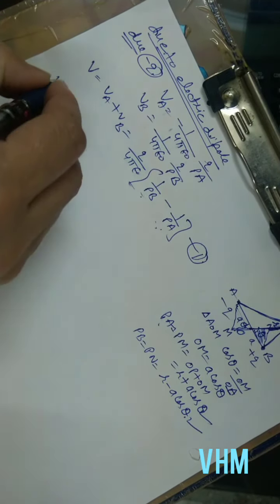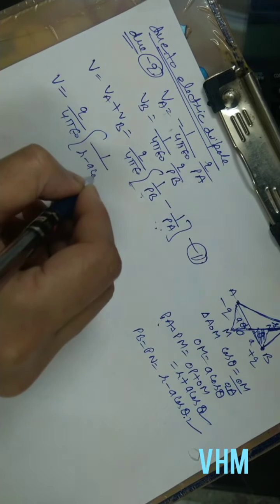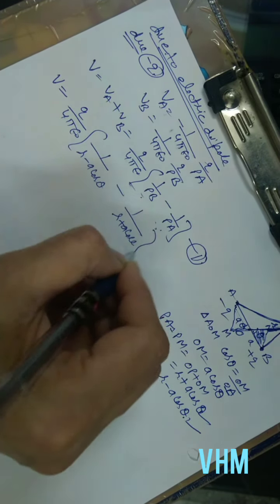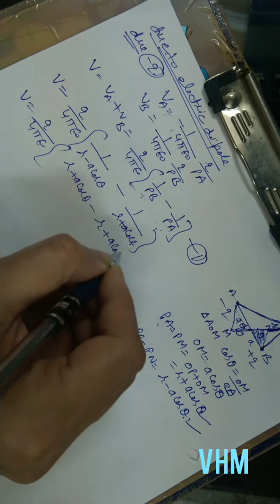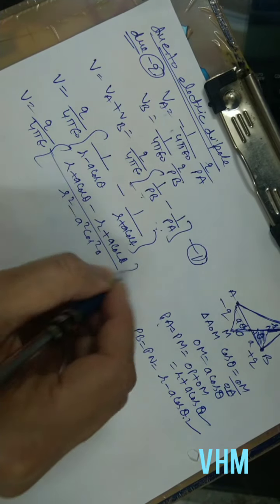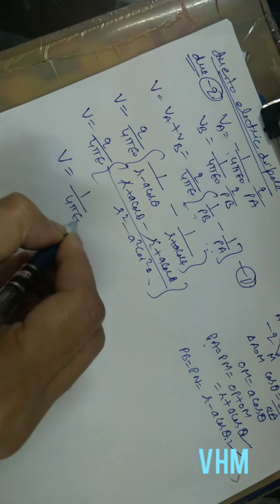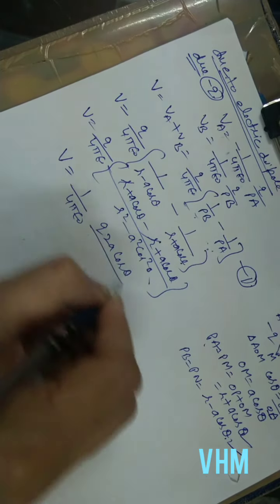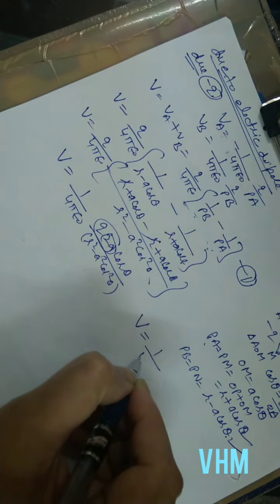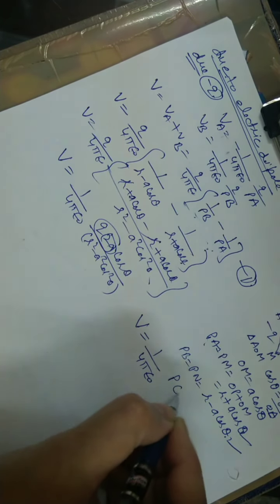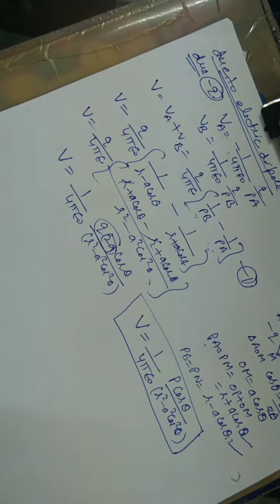Substituting these values into equation 1: V = Q/(4πε₀) · [1/(R − A·cos θ) − 1/(R + A·cos θ)]. Simplifying: V = Q/(4πε₀) · (2A·cos θ)/(R² − A²·cos²θ). Since Q·2A equals the dipole moment P, this gives V = 1/(4πε₀) · P·cos θ/(R² − A²·cos²θ). This is the electric potential of the dipole at any point.